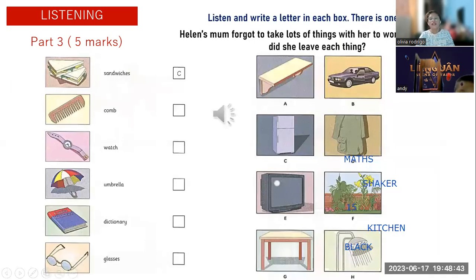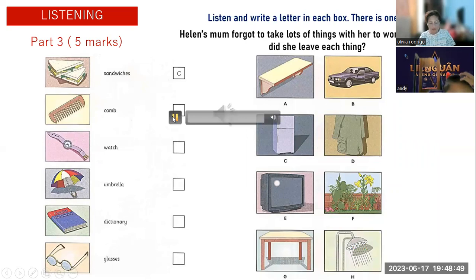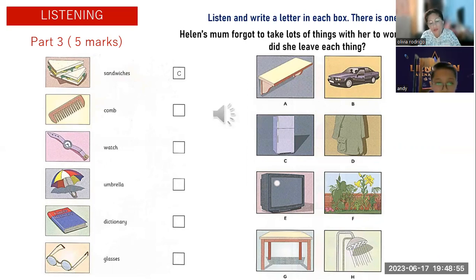This one, please listen and write a letter in the box. Ready Andy? Part three, listen and look. There is one example. Helen's mum forgot to take lots of things with her to work today. Where did she leave each thing? Did you have a good day at work, mum? Oh Helen, I had a horrible day. I love my job, but I left a lot of things at home this morning. I made some sandwiches last night for my lunch. I put them in the fridge and forgot to take them out. Can you see the letter C? Now you listen and write a letter in each box.